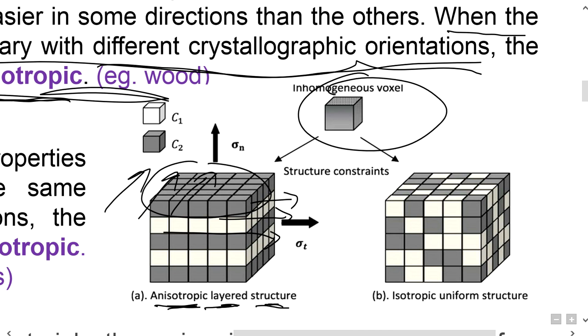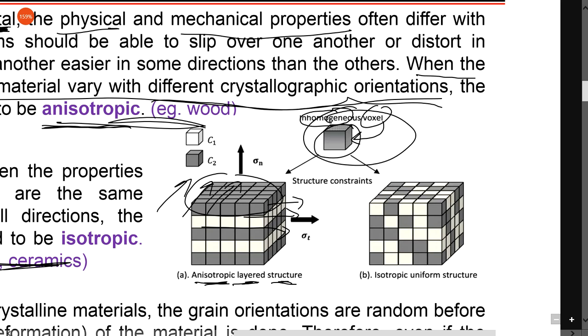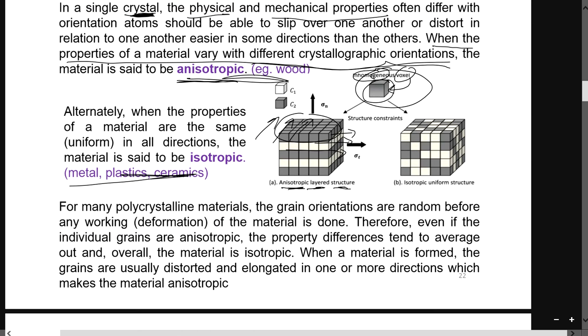Inhomogeneous means inconsistent, voxel means it's just a cube, so it's an inconsistent cube. Each of the individual grains - I believe these grains are these little cubes over here - are anisotropic.